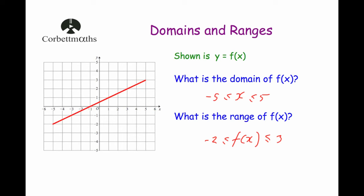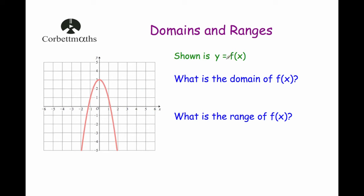Let's have a look at our first question. We've got a graph of y equals f(x) — it's a quadratic — and we're asked to find the domain and the range of the function. Looking at this graph, first let's consider the domain, the values of x which have been inputted. They've started at negative 2 and finished at 2. So we're going to write: x is bigger than or equal to negative 2, but less than or equal to 2. So all the values from negative 2 to 2 were placed into the function.